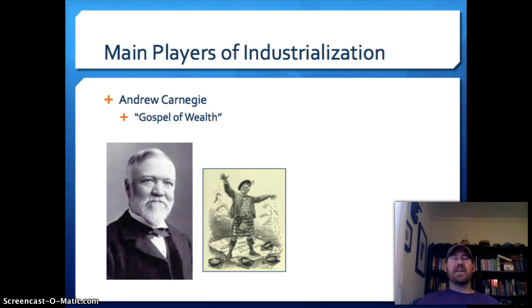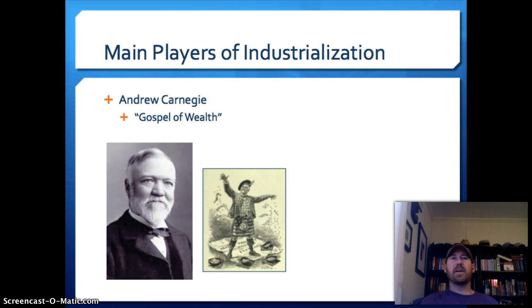The first major player of industrialization is Andrew Carnegie. He's associated with the steel industry and ended up with a steel empire, becoming one of the richest men in America. Towards the end of his career he sold his company for about $480 million. For our purposes, he's probably best known for his later philosophical shift — he believed that with wealth comes responsibility, which he discussed in something called the Gospel of Wealth.